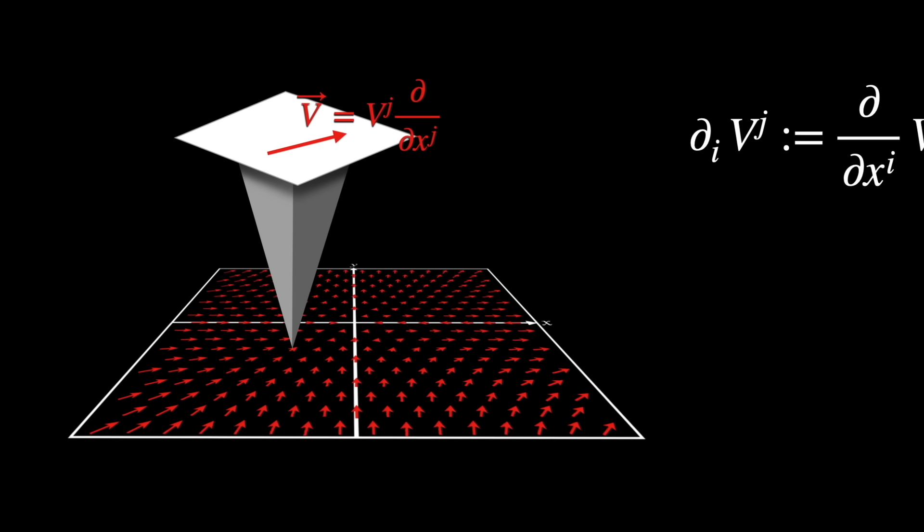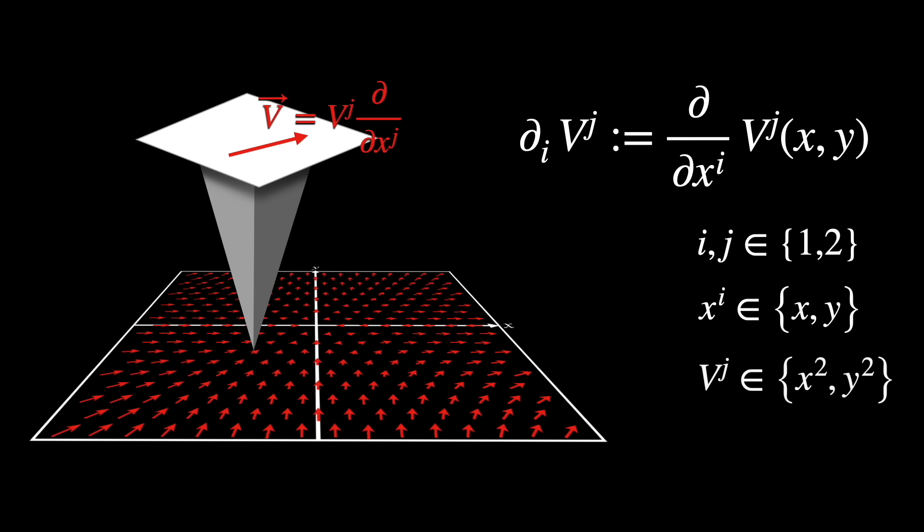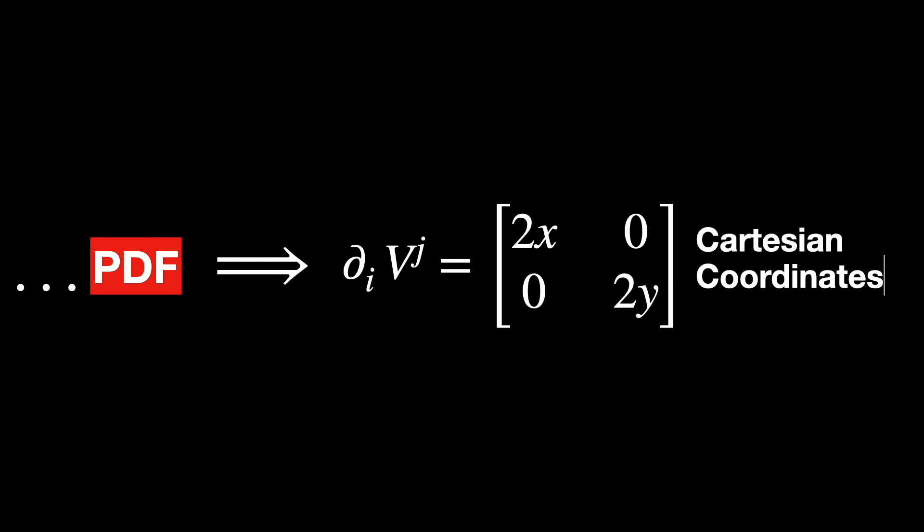Now, we can take the partial derivative of the vector field, component by component. After working on the math, you'll find this matrix that describes each of the four possible values of this object, written in Cartesian coordinates.